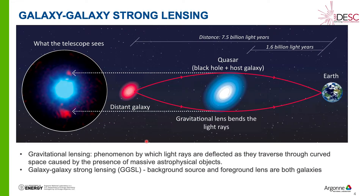Gravitational lensing is a naturally occurring phenomenon in which light rays are deflected as they traverse through curved space, caused by heavy objects in their path. For example, a distant galaxy shown in red, when observed from Earth with a heavy object in the path, has its light bent — so we observe light from the same distant galaxy appearing at two different places. Galaxy-galaxy strong lensing is a phenomenon in which the heavy object is another galaxy.